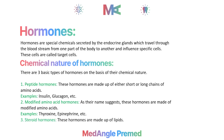The third type of hormone is steroid hormones. These are hormones which are made from lipids — for example, from cholesterol. Examples of steroid hormones include progesterone, estrogen, testosterone, and aldosterone.